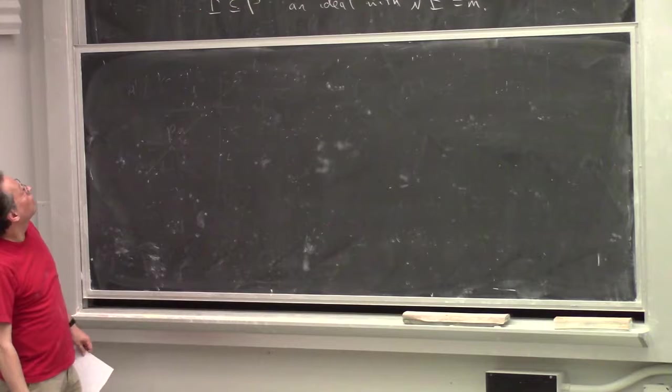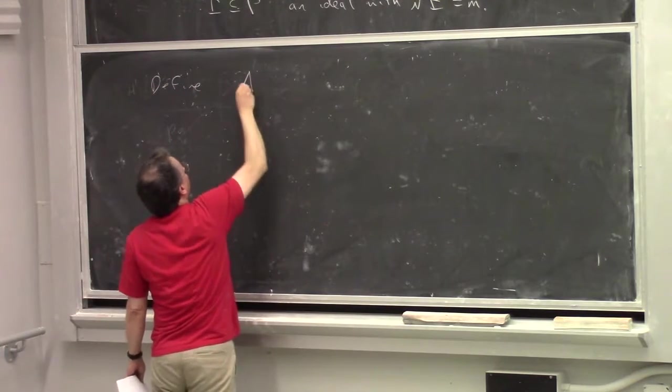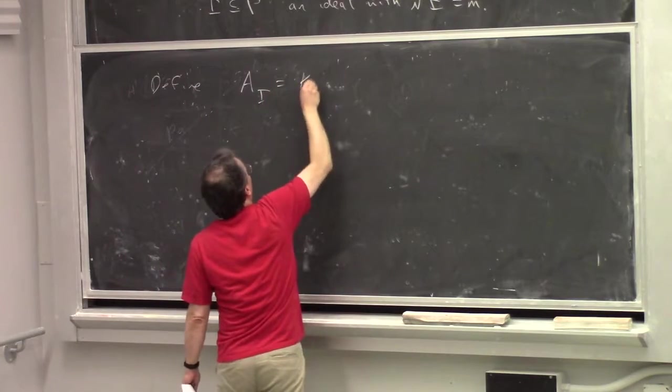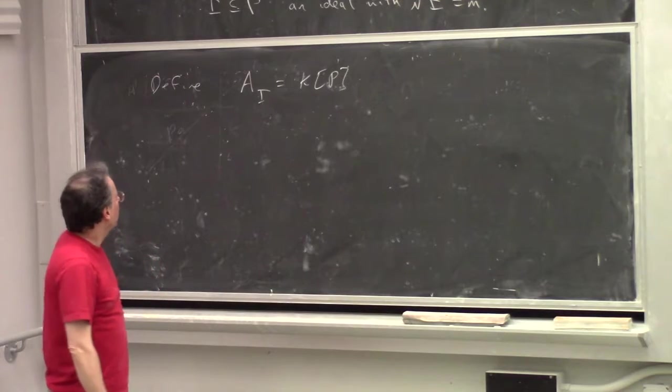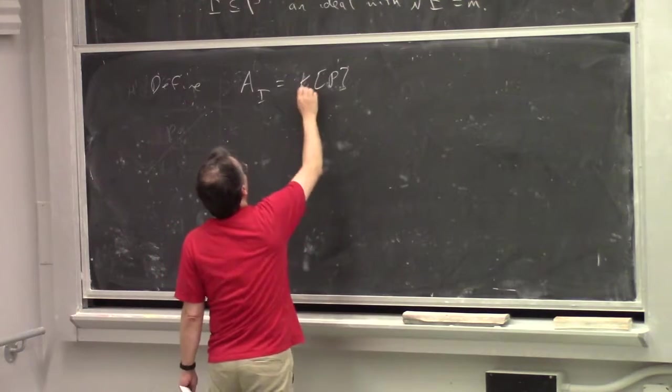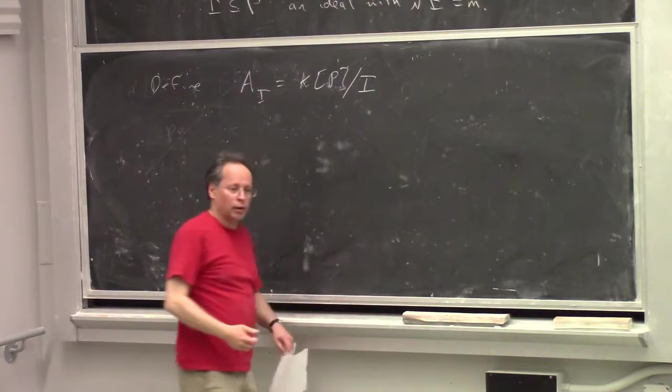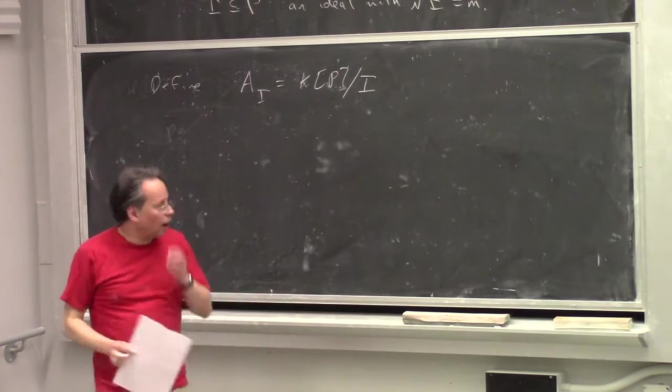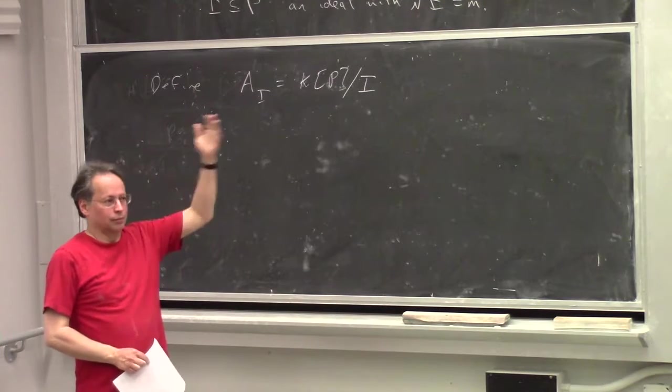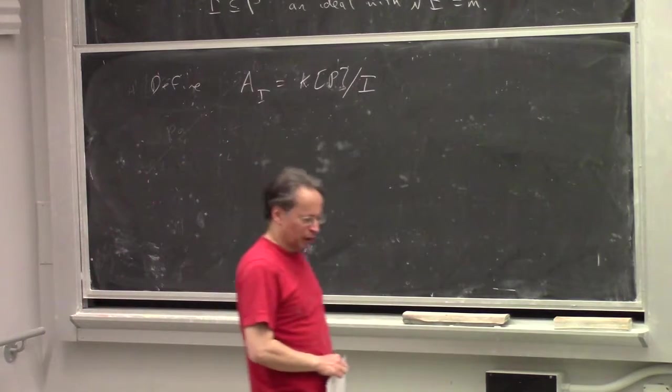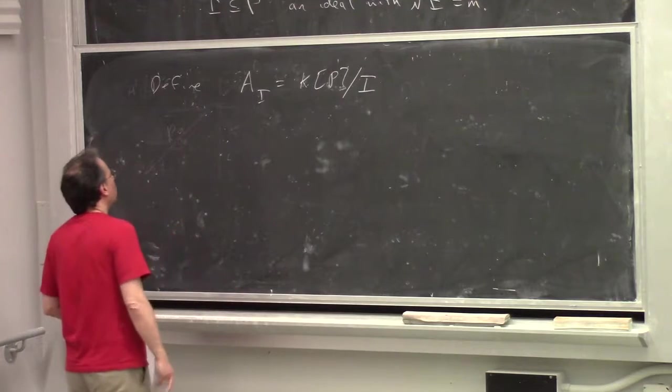You can always do this. And then we'll let F and M be the maximal monomial ideal. And we'll fix some I contained to be an ideal whose radical is this maximum ideal. And then let's define the ring A_I. We're working over some field k, the same field that X is defined over, and we divide out by the homology of I.